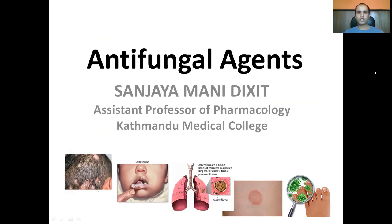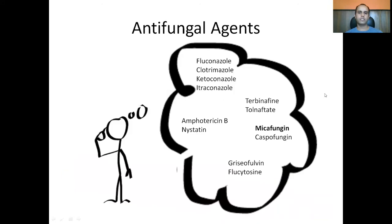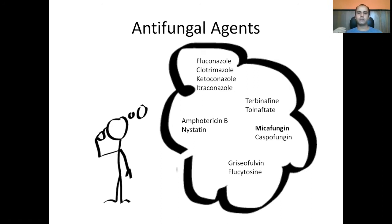Welcome to today's lecture on antifungal agents. When thinking about antifungal drugs, there are azoles like fluconazole, clotrimazole, ketoconazole, itraconazole; polyenes like amphotericin B and nystatin; echinocandins like micafungin and caspofungin; allylamines like terbinafine; and other drugs like griseofulvin and flucytosine.